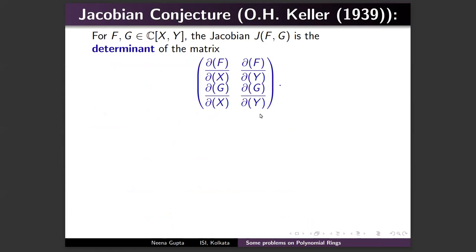Now I come to the first problem: the Jacobian Conjecture. I can state it to a high school student. Unfortunately it is one of the most notorious problems, and many mathematicians have tried it — sometimes failing, sometimes believing they had solved it, leading to published incorrect proofs. Take any two polynomials f and g in two variables and consider their Jacobian, the determinant of the matrix of partial derivatives ∂f/∂x, ∂f/∂y, ∂g/∂x, ∂g/∂y.